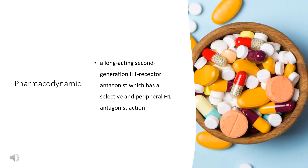Pharmacodynamics: Desloratadine is a long-acting second-generation H1 receptor antagonist which has a selective and peripheral H1 antagonist action. Histamine is a chemical that causes many signs of allergic reactions, such as the swelling of tissues. Histamine is released in histamine-storing cells (mast cells) and attaches to other cells that have receptors for histamine. The attachment of histamine to the receptors causes the cell to be activated, releasing other chemicals which produce the effects we associate with allergies. Desloratadine blocks the H1 receptor and thus prevents activation of cells by histamine. Unlike most other antihistamines, desloratadine does not enter the brain from the blood and therefore does not cause drowsiness.